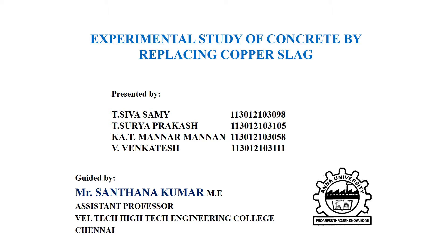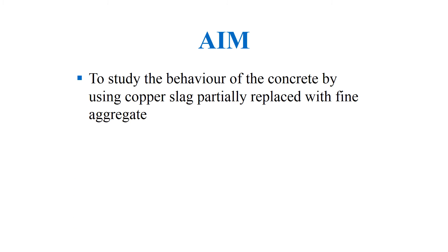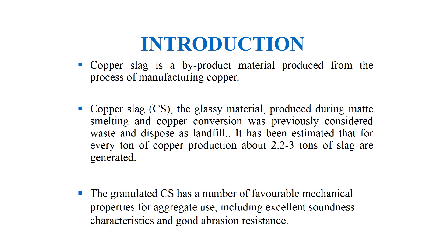Experimental study of concrete by replacing copper slag. Our project is to study the behavior of concrete by using copper slag, partially replaced with fine aggregate. Copper slag is a by-product material produced from the process of manufacturing copper. It is a glassy material produced during the smelting process and was previously considered as waste disposed as landfill. It has been estimated that for every ton of copper production, about 2 to 3 tons of copper slag are generated.